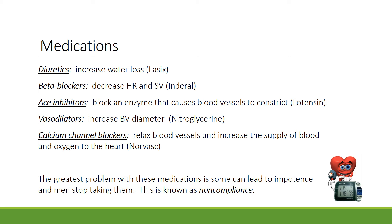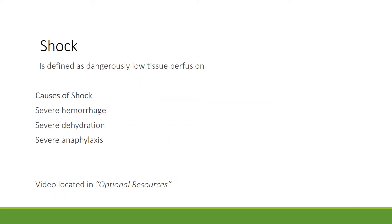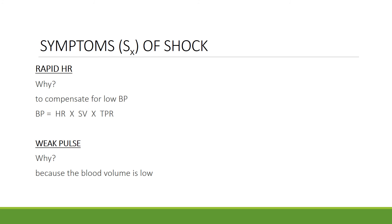Shock is defined as dangerously low tissue perfusion, meaning blood is not getting to all parts of the body that need it. Causes include severe hemorrhage, severe dehydration, and severe anaphylaxis. Symptoms of shock include a rapid heart rate — the heart rate increases to compensate for low blood pressure — and a weak pulse because blood volume is very low. Remember, increasing heart rate, stroke volume, or total peripheral resistance will increase blood pressure.